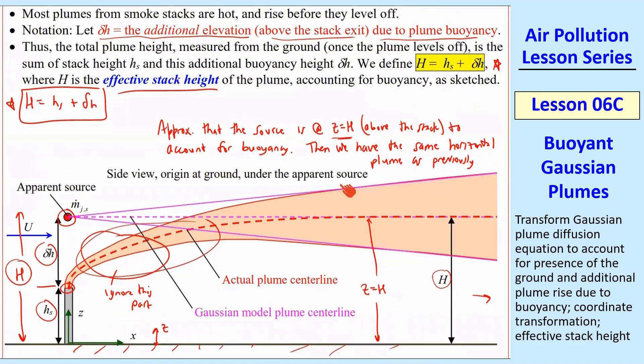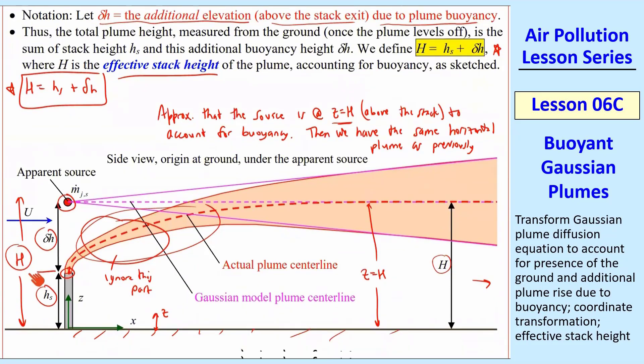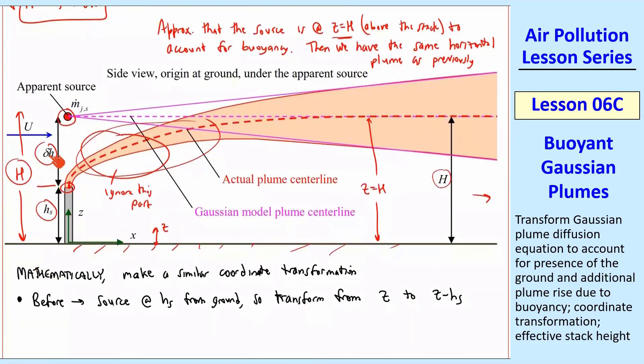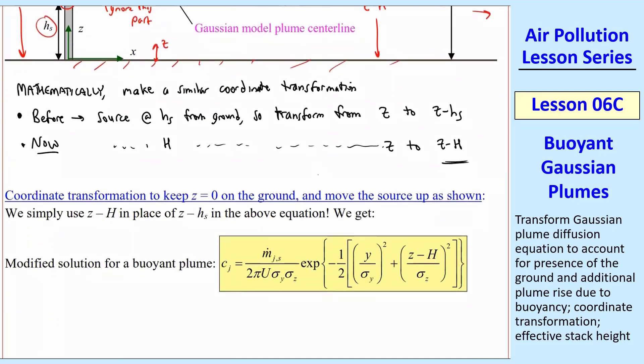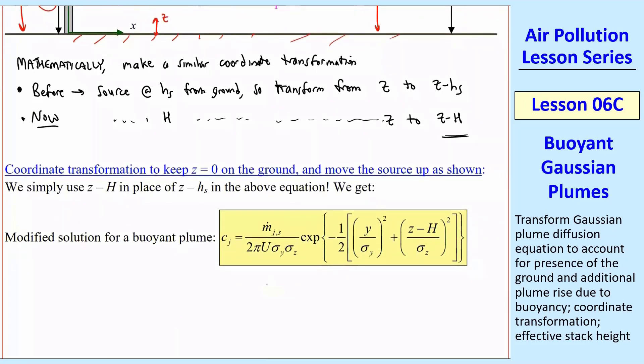Now, instead of just at hs, our source is at capital H, which is hs plus delta h. And so now we put the source at h from the ground. So the transformation from z to z minus h, same equation as above, except instead of z minus hs, we have now z minus h. And so this is all the transformation that we have to do to account for buoyancy.